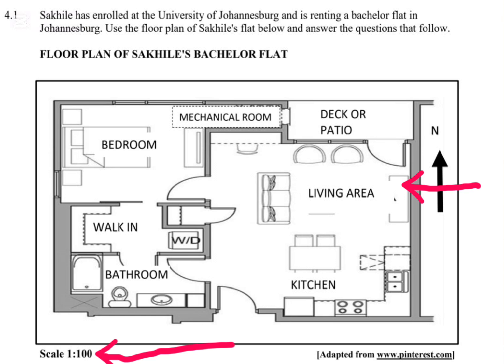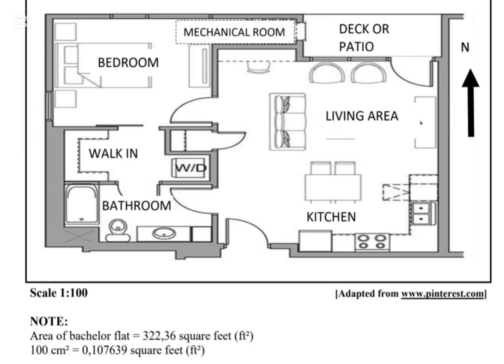Additional information is given: note the area of the flat is 322.36 square feet. In terms of conversion, we are given that 100 centimetres squared equals 0.107639 square feet. So let's look at the questions.